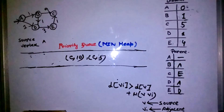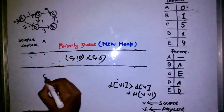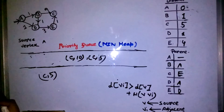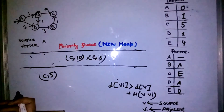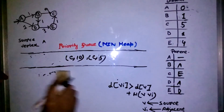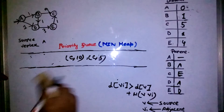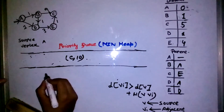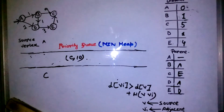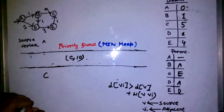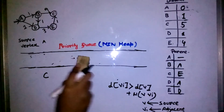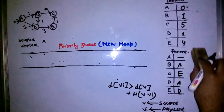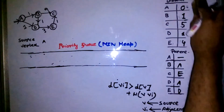Extracting the minimum gives C with priority five. C has no adjacent vertices, so it is discarded. Extracting again gives the old C entry with priority ten — again, C has no adjacent vertices, so it is discarded. The queue is now empty. We are done. We have obtained all the shortest distances and the parent array.